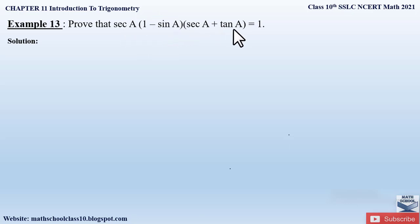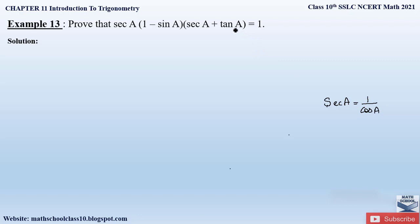We will convert secant and tan in terms of sine and cos using the relationships: sec A can be written as 1 by cos A, and tan A can be written as sin A by cos A. This relationship we studied in the first introduction video for Exercise 11.1. Do watch that video before solving such problems.